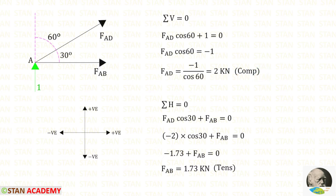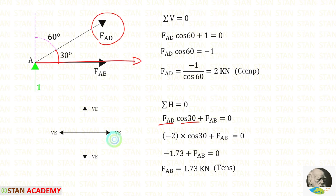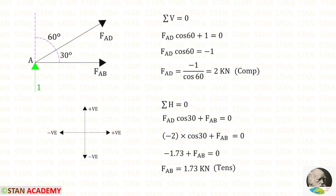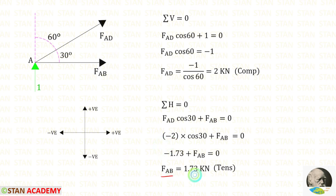Now let us apply sigma H equals 0. We have to make FAD horizontal, which requires 30 degrees, so we multiply FAD with cos 30. When made horizontal it acts towards the right side, so it is positive. FAB is also acting towards the right side, so it is positive. Since FAD is compressive, we apply it as negative. Finally for FAB we get a positive value, meaning it is tensile.